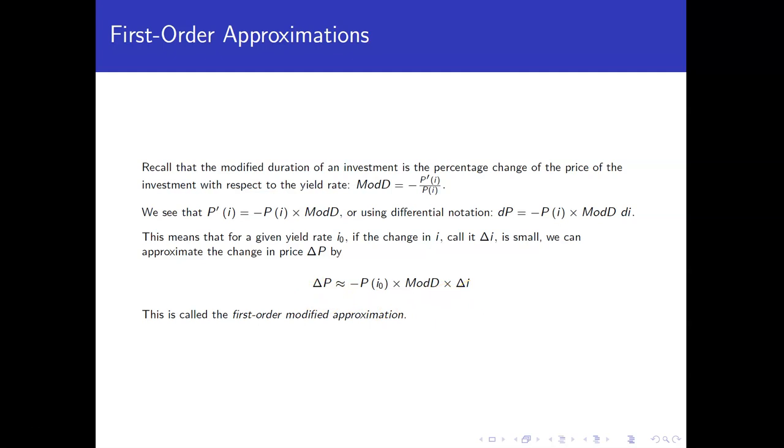And this is what we meant by earlier when we mentioned that we have a measure with these duration calculations as a measure of interest rate sensitivity. So for this particular one, we call it the first order modified approximation.